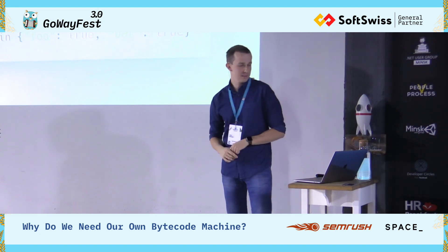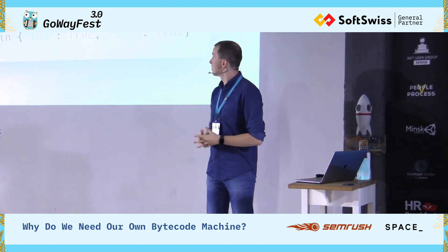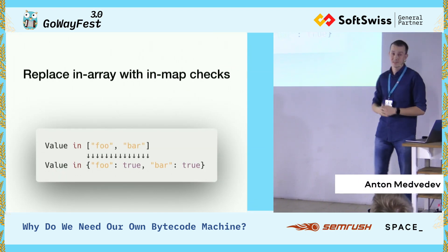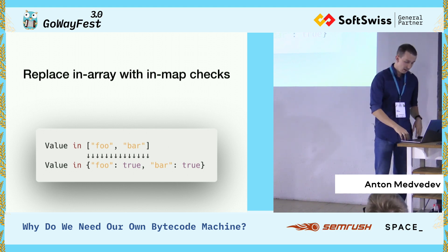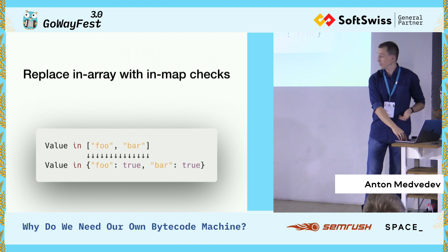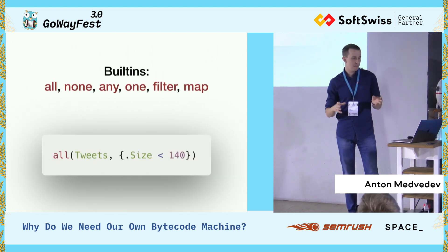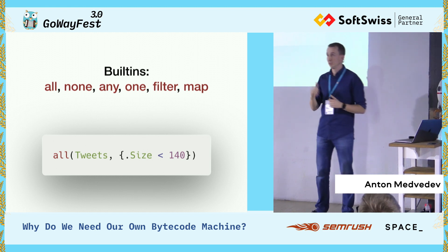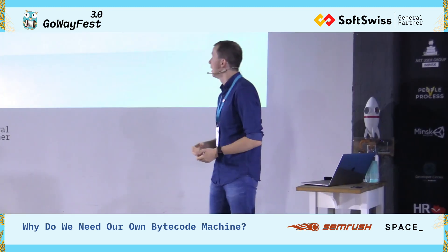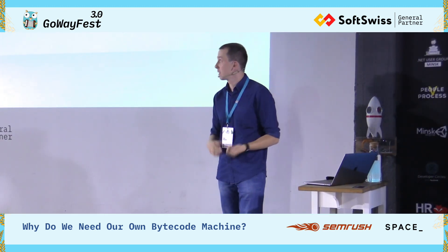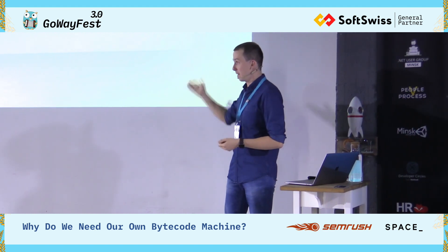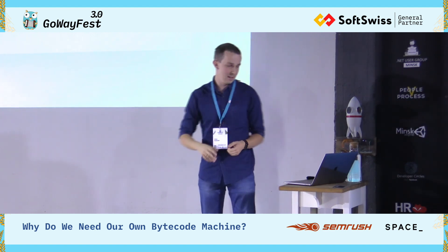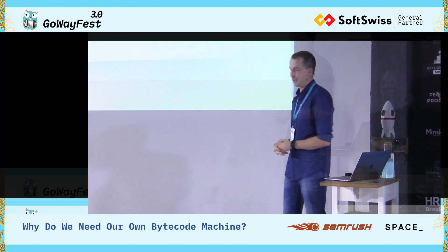Another common optimization is the in-array check, which can be simply transformed to an in-map check, and it also gives us a performance boost. After a year we also found that sometimes you need a little more. Built-in helpers are really handy and can reduce the amount of code we need to write ourselves — and we can let our managers write them themselves. These are not function calls, they are macros, and they will be inlined for really fast execution.